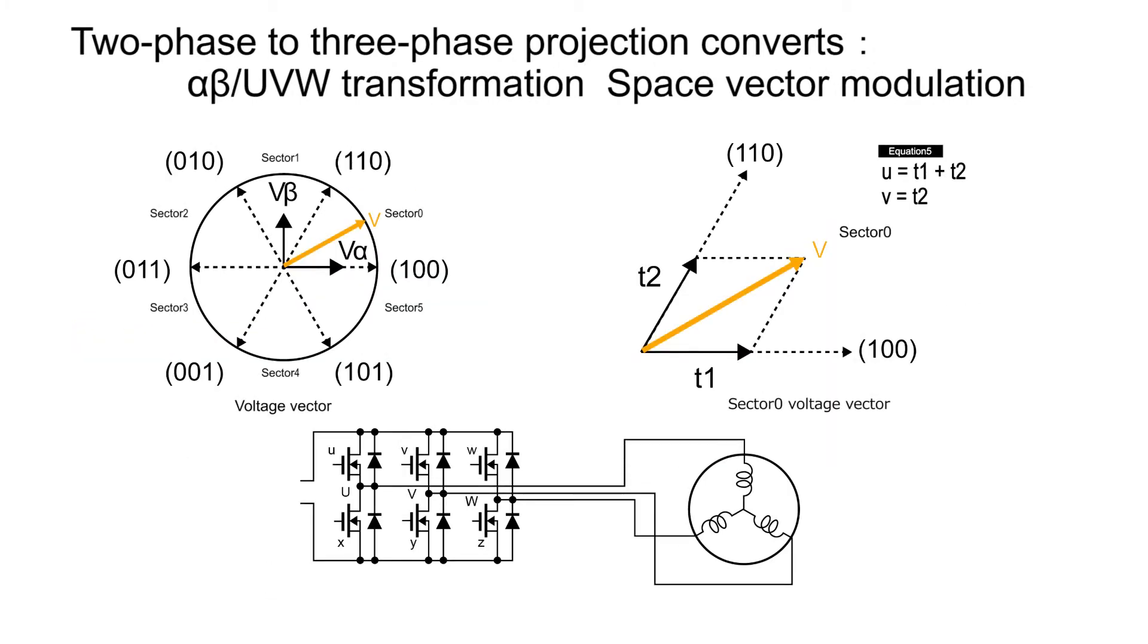Next, two-phase voltages V-alpha and V-beta are put on this space, and a vector V is synthesized by vector composition of V-alpha and V-beta. Since the synthetic voltage V rotates together with the rotor, it moves from sector to sector in order.